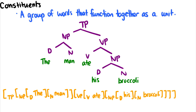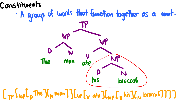So for instance, we have a noun phrase 'the man,' which is grouped together. Then we have a predicate verb phrase 'ate his broccoli,' which is grouped together. Inside that predicate verb phrase, we also have 'his broccoli' functioning as a unit or a constituent.